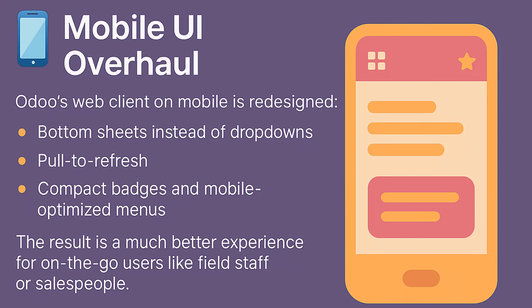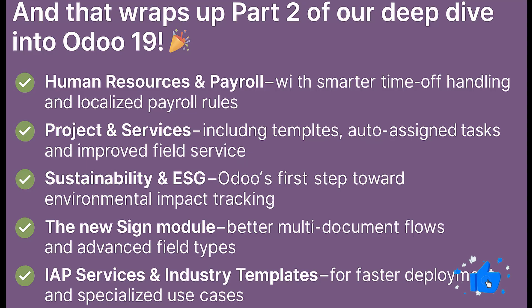That wraps up part two of our deep dive into Odoo 19. We explored Human Resources and Payroll with smarter time-off handling and localized payroll rules; Project and Services including templates, auto-assigned tasks, and improved field service; Sustainability and ESG as Odoo's first step toward environmental impact tracking; the new Sign module with better multi-document flows and advanced field types; IAP services and industry templates; and AI and automation with a GPT-style assistant, smart fields, and custom no-code AI logic. Odoo 19 is clearly evolving from an ERP into a true smart business platform, blending powerful automation, better usability, and deeper insights for every role in your company.